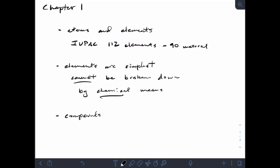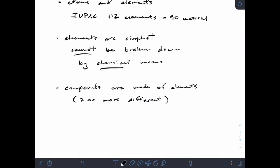Compounds are made up of elements, and usually we're talking about things that are two or more different elements. So compounds, because they're made of two or more different elements, they can be broken down into simpler parts.